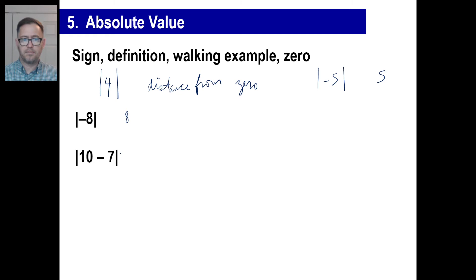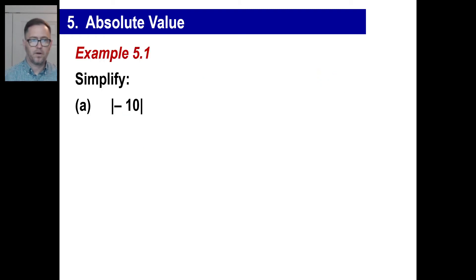The absolute value of negative 8 would be what? Just 8, right? That's how far it is. The absolute value of 10 minus 7. Well, 10 minus 7 is 3. The absolute value of 3 is 3. The opposite of the absolute value of 14 minus 6. Well, let's do this first. What is 14 minus 6? It's 8. What's the absolute value of 8? 8. So now, the opposite of 8 will attach that at the very end. The answer to that is negative 8.